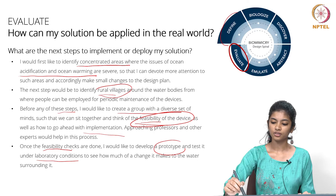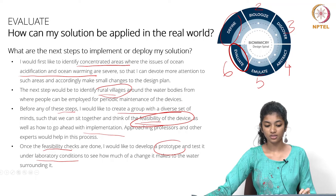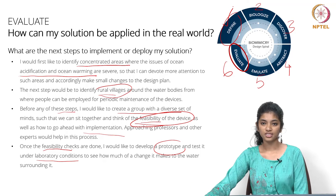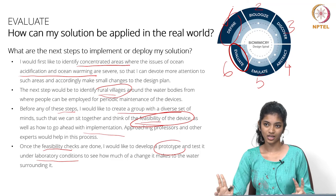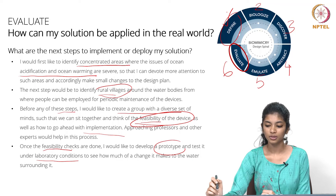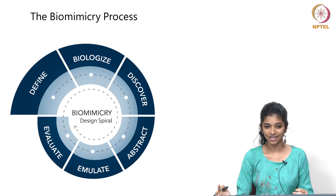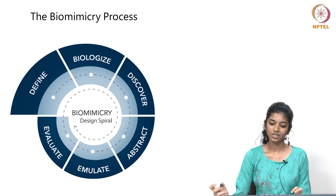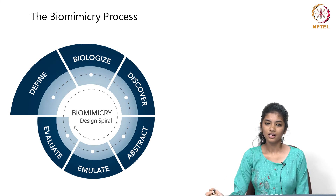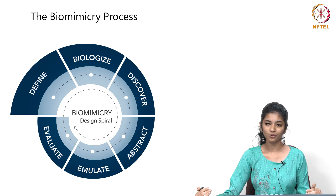This is how you go through the design spiral: define, biologize, discover, abstract, emulate, and evaluate. There is no step in the biomimicry process that is unimportant — each step must be completed properly before moving on. Going systematically is key; you will get stuck at times, but if you have done the previous step properly, it won't take long to overcome the next. Previously I knew nothing about biomimicry, but in a short span of time, moving systematically at my own pace, I was able to come up with a solution. The main point is going with an emotional connect and working toward what you love.